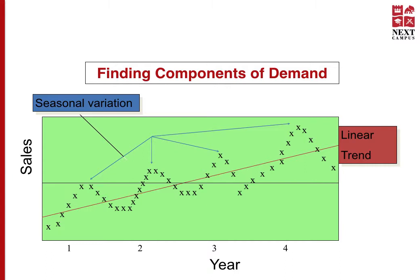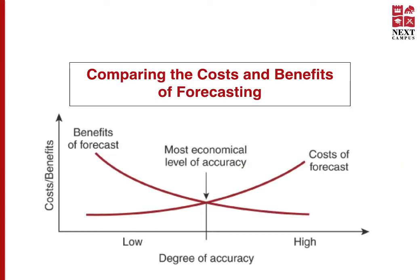Demand forecasting incurs costs based on the tools you purchase, the people hired to do demand forecasting, and so on. In this graph, you will notice the point where costs and benefits converge is the acceptable degree of accuracy of a forecast to work with. However, forecasts are always inaccurate, and initiatives to increase forecast accuracy further will incur higher costs that may not give the expected return.